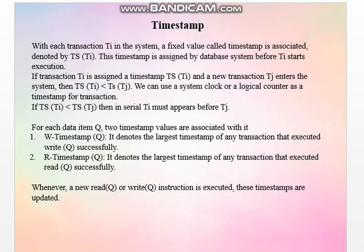For example, if a new transaction T4 arrives at timestamp 1045 and executes both read and write on data item Q, then both R_timestamp(Q) and W_timestamp(Q) will get updated. So these timestamps are not fixed; they get updated according to transaction execution. This is all about timestamps. In the next lecture, we will see the Timestamp Ordering Protocol. If you find any difficulty, you can write in the comment box. Thank you.